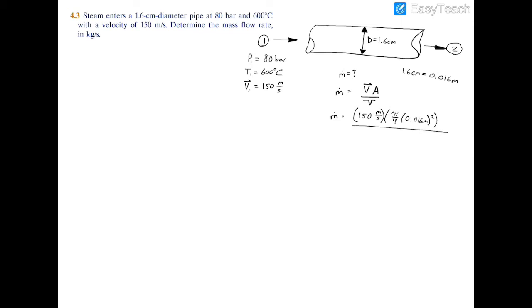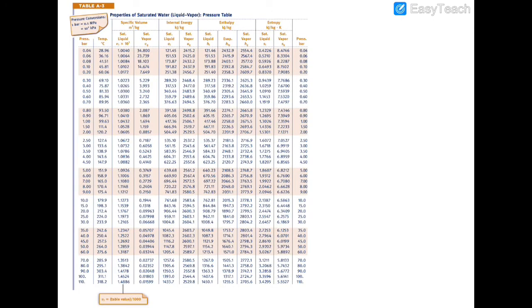To find the specific volume, we have 600 degrees Celsius and 80 bar. Let's go to the saturated tables.